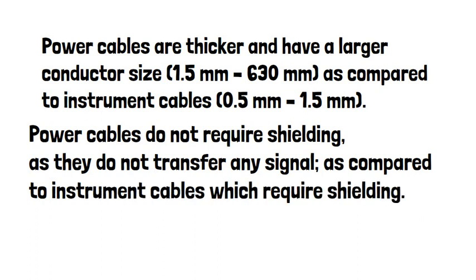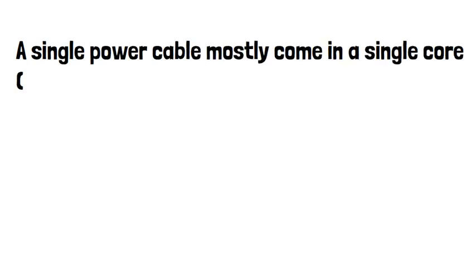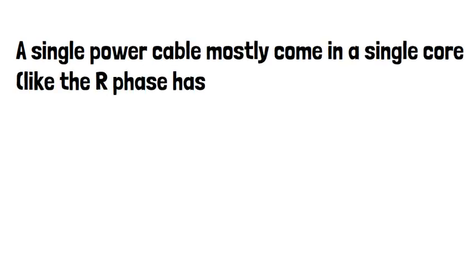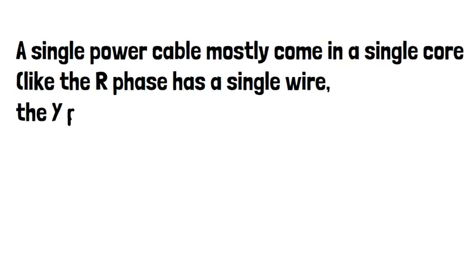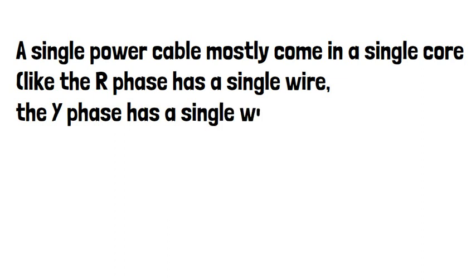6. A single power cable mostly comes in a single core — for example, the R phase has a single wire, the Y phase has a single wire, and so on.